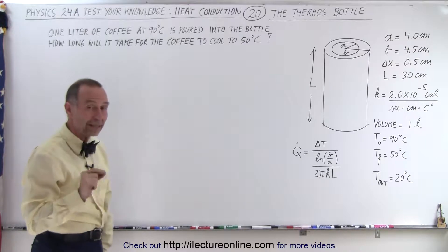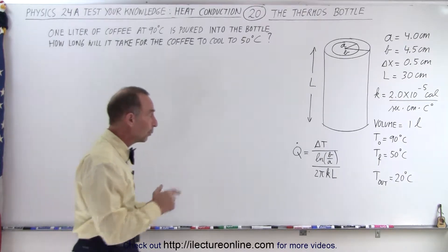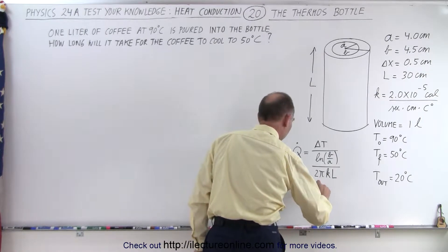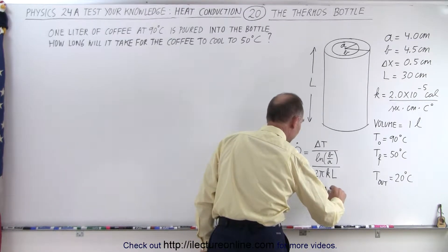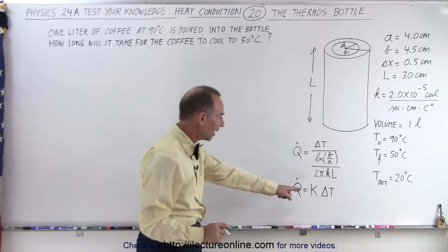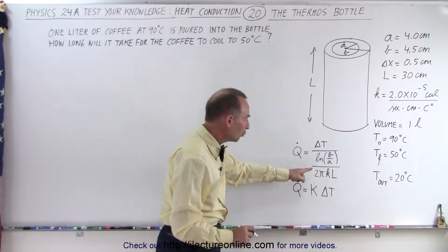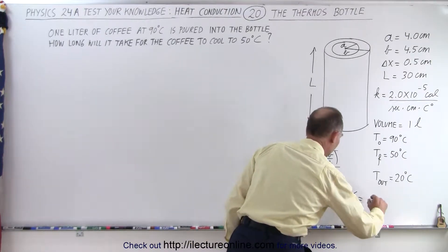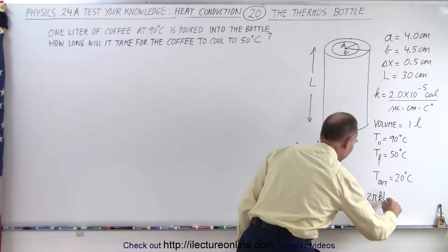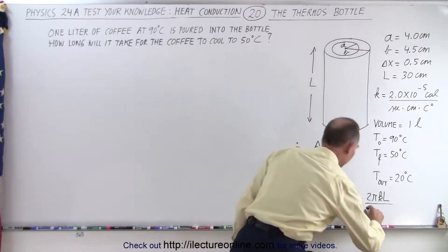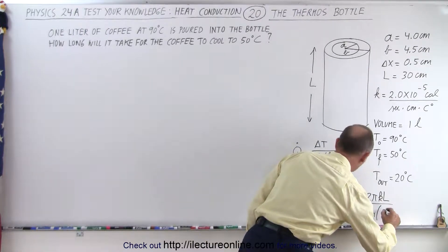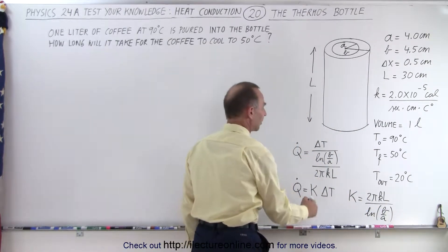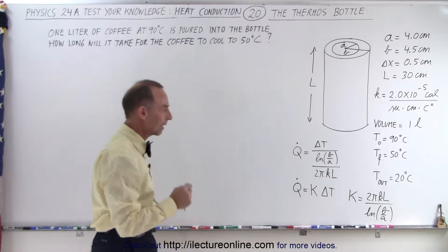To make things a little bit simpler, we're going to write this equation as: Q-dot equals some constant capital K times ΔT. Notice that capital K is equal to 2πkL divided by the natural log of b over a. So we just take the whole expression and write it as K times ΔT — if we take the inverse of the heat resistance expression, we get that capital K.